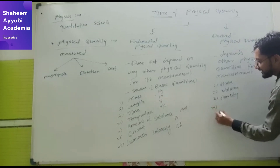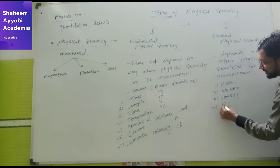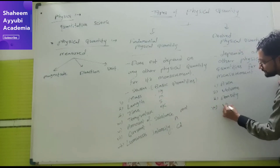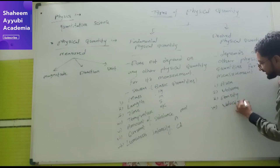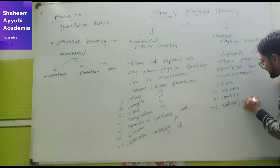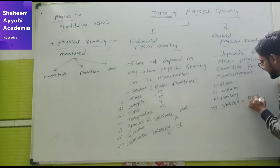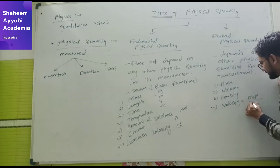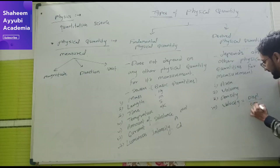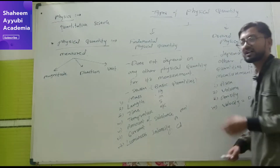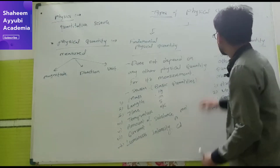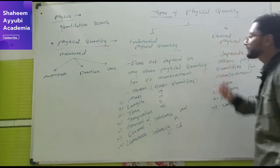Next is velocity. Velocity is displacement divided by time. Similarly, speed is also displacement divided by time. These are derived physical quantities.